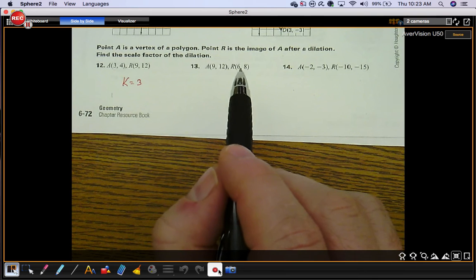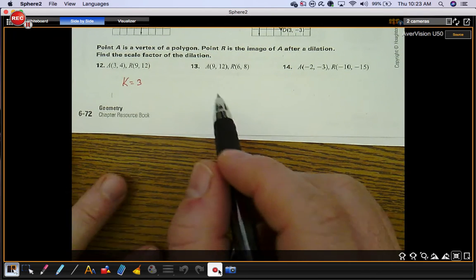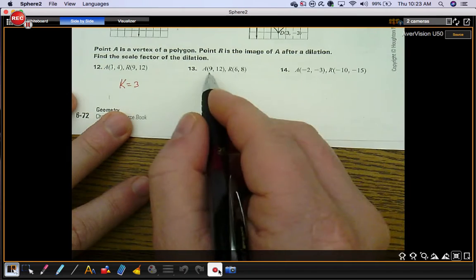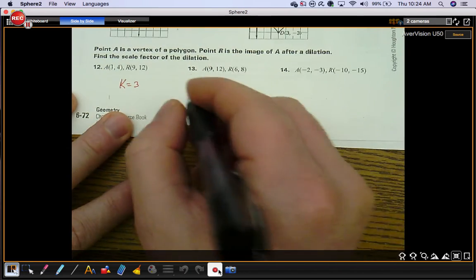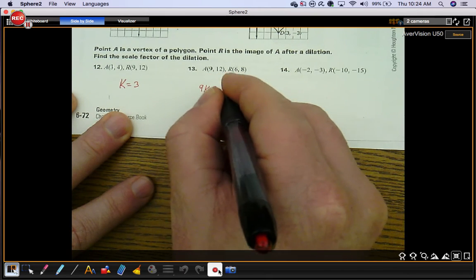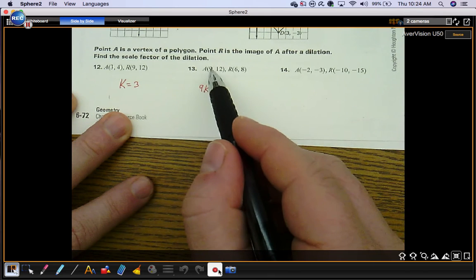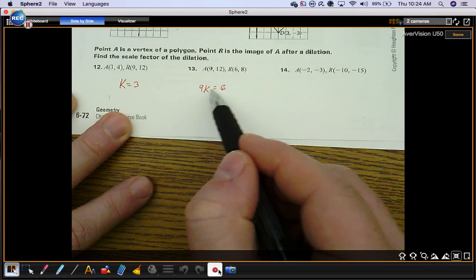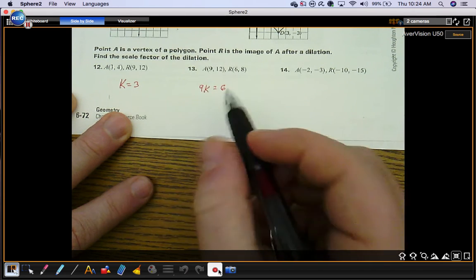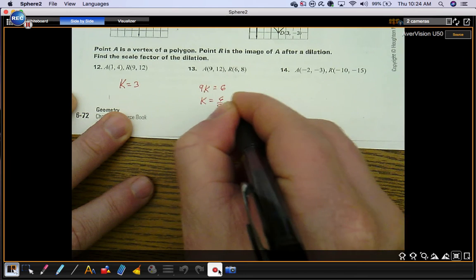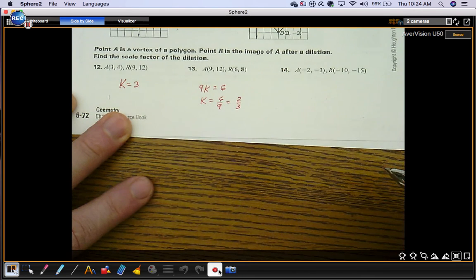9 times something gives you 6. 12 times something gives you 8. This one's a little bit tougher. Maybe you can't do this one in your head, and obviously you're going backwards, so that makes it a little bit tougher too. You can use algebra here. 9 times the scale factor is going to give you 6. 9 times the scale factor equals 6. Solve for the scale factor. It's 2 thirds.